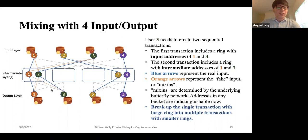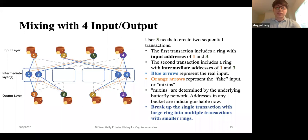Doing the same thing for the second round of transition makes one and three fully indistinguishable. Similarly for two and four — they use the same approach, using the butterfly network to determine which addresses they should include. Eventually this ensures that the only thing leaked is the number of addresses within the same buckets. Intuitively, this breaks a single transaction with a large ring (as in the naive solution) into multiple rounds of transactions with smaller rings.